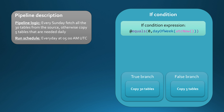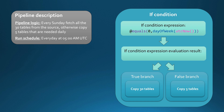The expression starts from the innermost function, UTCNow, which returns the current timestamp. Then the dayOfWeek function wraps UTCNow and returns the index value of the date — Sunday is index zero, Monday is index one, and so on. If dayOfWeek returns zero, the equals function resolves to true because zero equals zero. If dayOfWeek evaluates to any other value, the equals function returns false, determining which branch we go to in the If Condition.